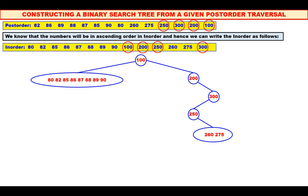Now, among 260 and 275, which is the root? See the post-order — it is 275. Mark 275 and mark 275 in inorder. When you observe the inorder, 260 is to the left of 275. Therefore, you make 260 as the left child of 275.